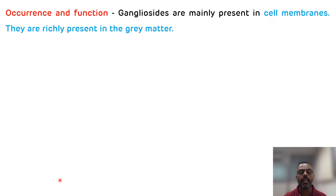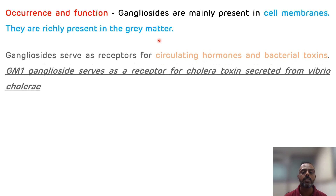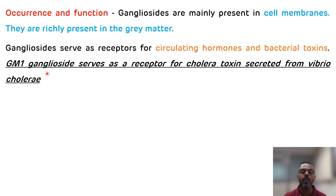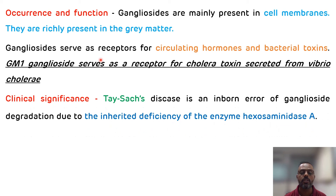Gangliosides are mainly present in cell membranes and are richly present in the gray matter of the brain. They provide receptors for hormones as well as for bacterial toxins. GM1 ganglioside serves as a receptor for cholera toxin secreted by Vibrio cholerae — this was asked in a NEET-PG 2022 exam. The disorder associated with gangliosides is Tay-Sachs disease, which occurs due to deficiency of hexosaminidase A. Note: hexosaminidase B deficiency causes Sandhoff's disease (associated with globosides), while hexosaminidase A deficiency causes Tay-Sachs disease.